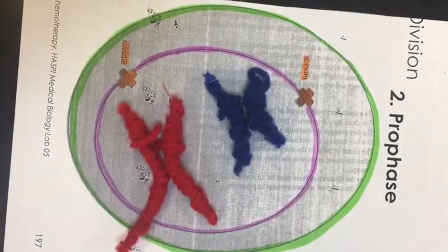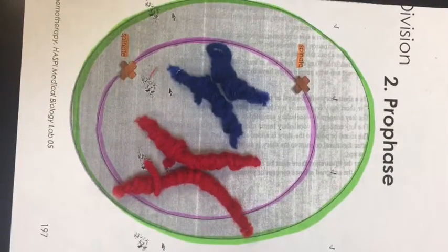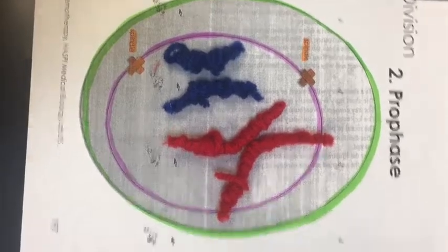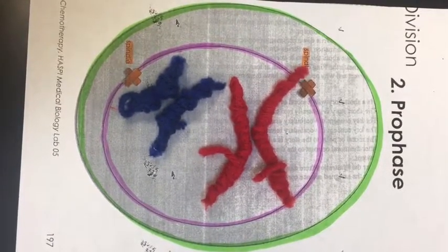The chromosomes make an X shape when they are supercoiled. It is necessary to have the DNA wound up because if the DNA wasn't organized then some DNA could be lost in the process.